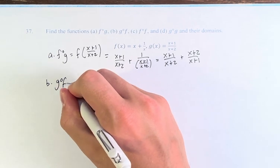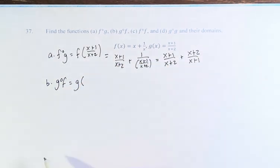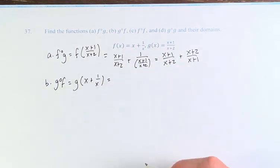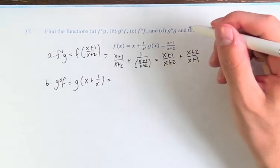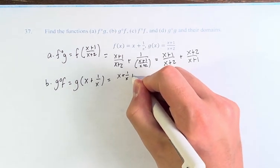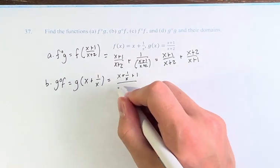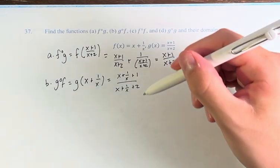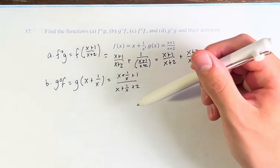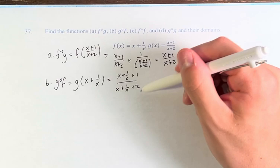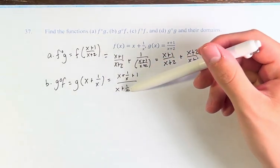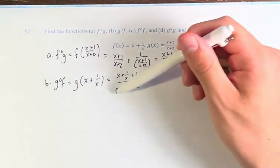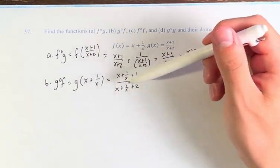Next, we're looking for g of f, so that's g of f of x, which is g of (x plus 1 over x). This is equal to, plugging it in: (x plus 1 over x) plus 1 over (x plus 1 over x) plus 2. We can do some simplification here, but I don't think that's necessary. What we're actually trying to find is the function itself and then the domain, and in its current state this is about as simple as it can get.